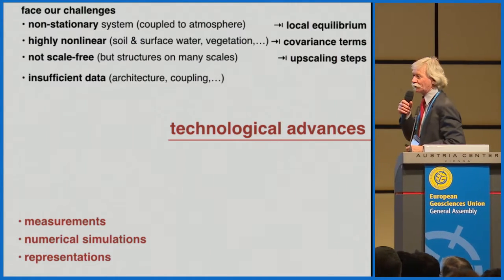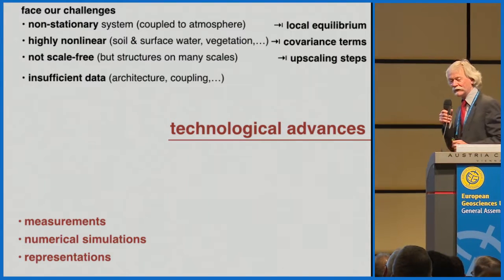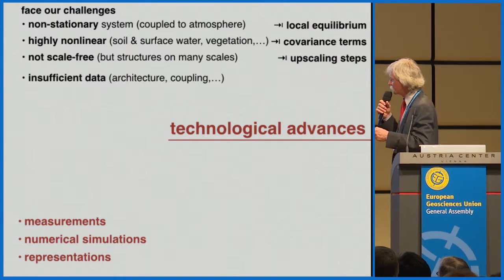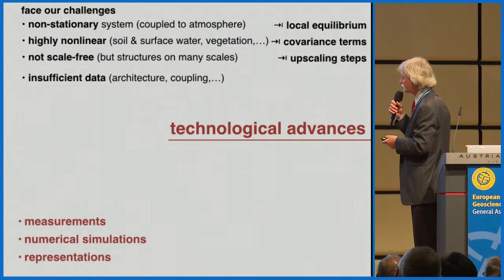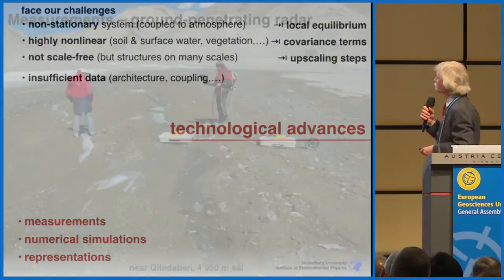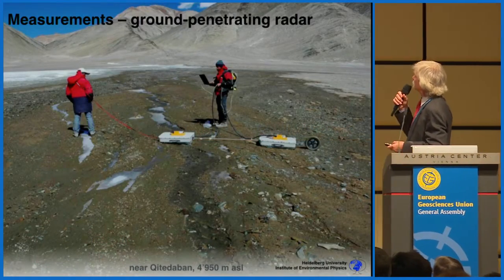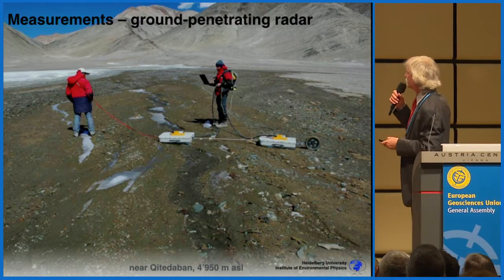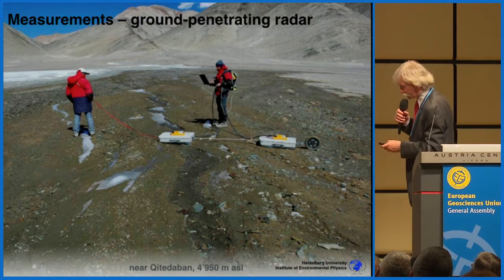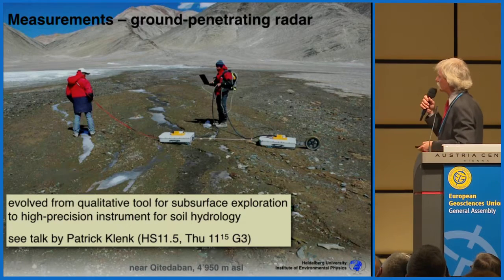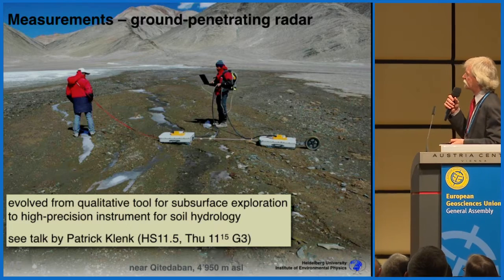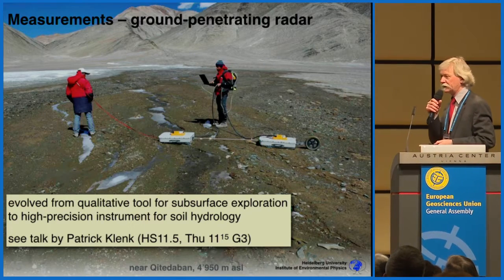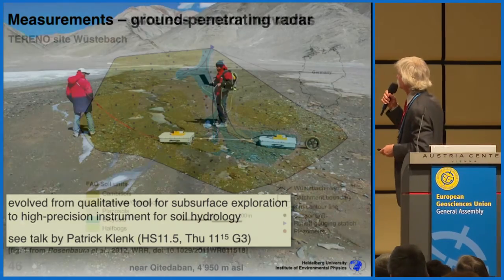Let us look at the technological advances that tell us why we might stay in business. I want to talk briefly about three things: measurements, numerical simulations, and representations. Starting with ground penetrating radar, which was essentially an engineering instrument for qualitative subsurface imaging, it has evolved over the last ten years from such a qualitative instrument to a high-precision instrument for soil hydrology.